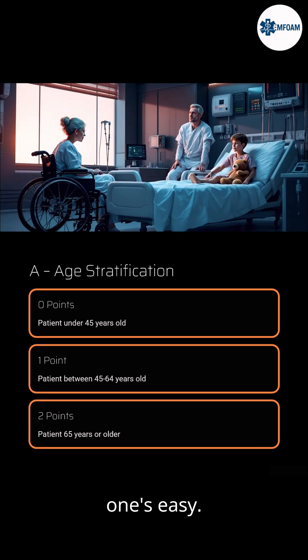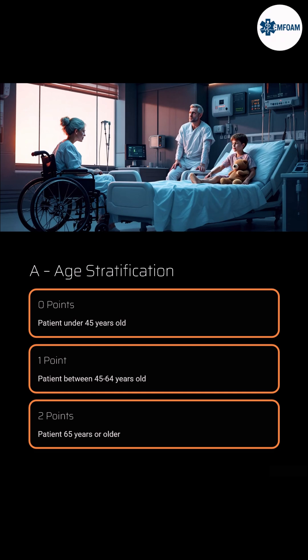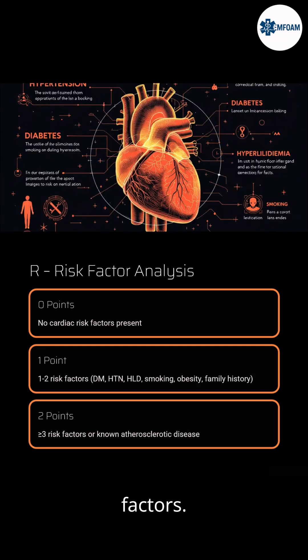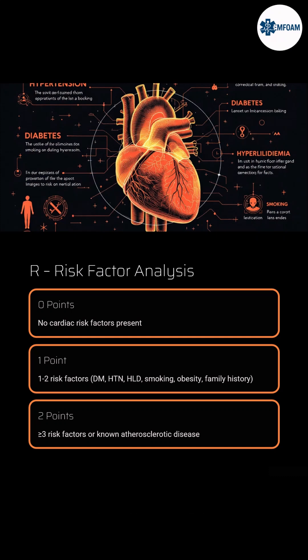Age is straightforward. Patients under 45 get 0, ages 45 to 64 get 1 point, and those 65 or older get 2. For risk factors: no risk factors scores 0, 1 or 2 risk factors scores 1, and 3 or more — or known atherosclerosis — scores 2.